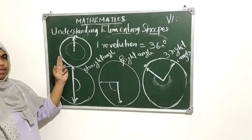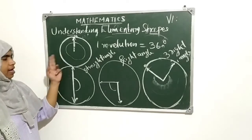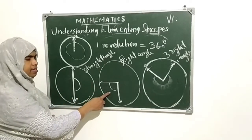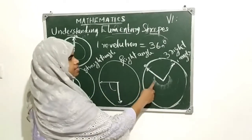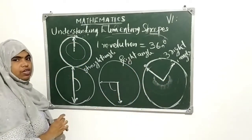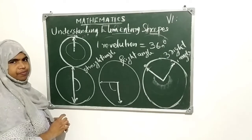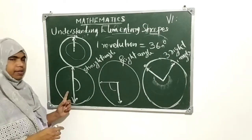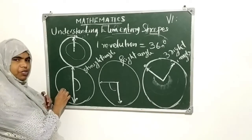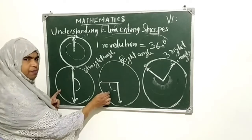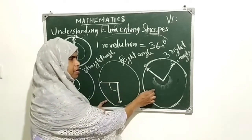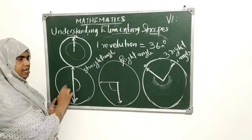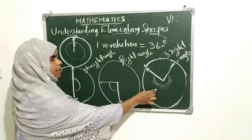So: this is one revolution, 360 degrees. This is a straight angle, 180 degrees. This is a right angle, 90 degrees. And this is three right angles, that is three-quarters of 360 degrees — three into 90. Here one-half, one-quarter, and three-quarters of one revolution.